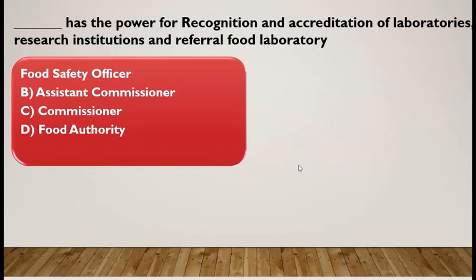Which authority has the power for recognition and accreditation of laboratories, research institutes, and referral food laboratories? If you have a private food lab and need government accreditation so that the FSSAI can send food samples for testing to your laboratory, the answer is the Food Authority — it is the apex body which can give recognition and accreditation to laboratories and research institutes.